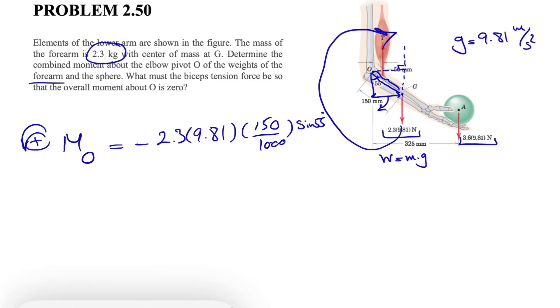That's everything for the moment of the forearm. Let's move on to the moment of the sphere. Same thing, the moment of this sphere is also clockwise, so another negative moment. The force is 3.6 times 9.81, the weight of the sphere. The distance we have is 325 millimeters, divided by 1000 to get it in meters, so we can get our moment in Newton-meter units.